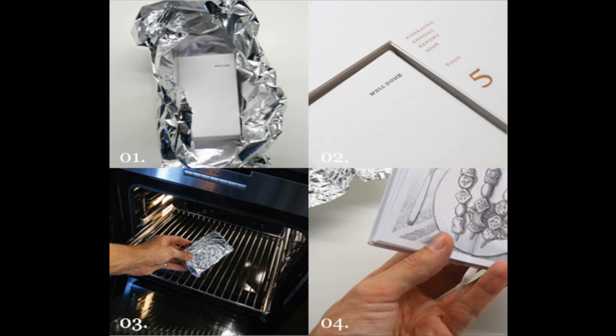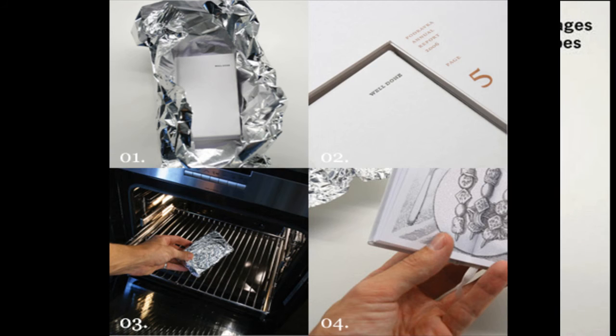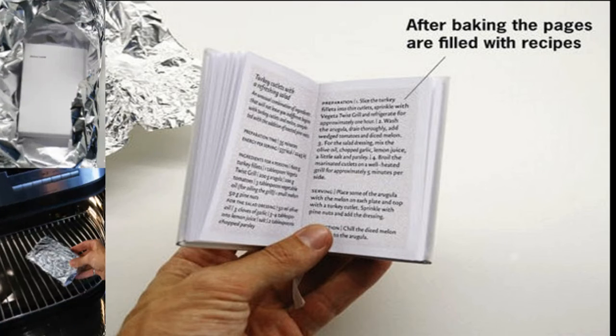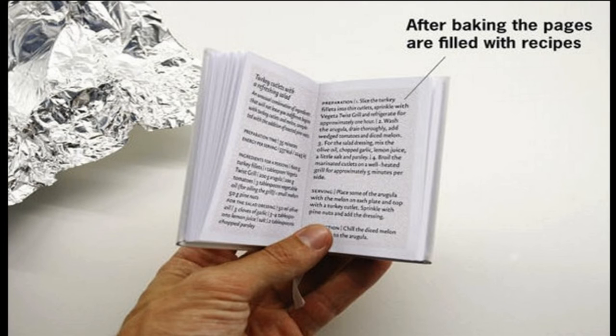Then, pop! Pictures and captions appear clearly. But remember, be careful when cooking the book because if you overcook it, it will burn. Whereas, if undercooked, the recipe and the picture will not appear.